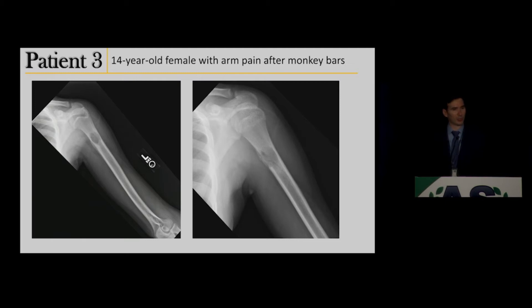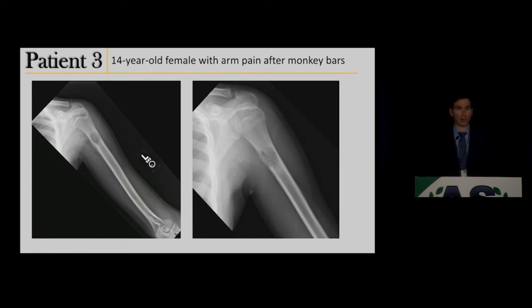Case 3: a 14-year-old female who was playing with her friends on a swing set. While on the monkey bars, she had acute pain in her upper extremity and was brought into the emergency department by her parents.